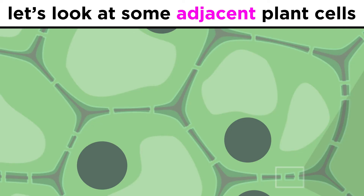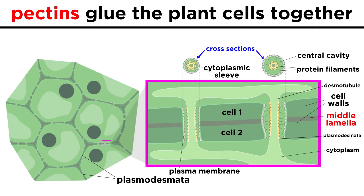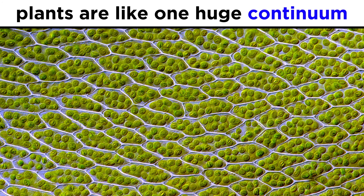When many plant cells are adjacent to one another, each has its own primary cell wall, and once mature, a secondary cell wall between the primary cell wall and the plasma membrane. Between the primary cell walls of adjacent cells sits the middle lamella, made of polysaccharides called pectins. This acts as a glue to keep all the cells together. In addition, tiny channels called plasmodesmata connect adjacent cells, allowing for the movement of cytosol and small molecules from one cell to another, which essentially turns the whole plant into one huge continuum.